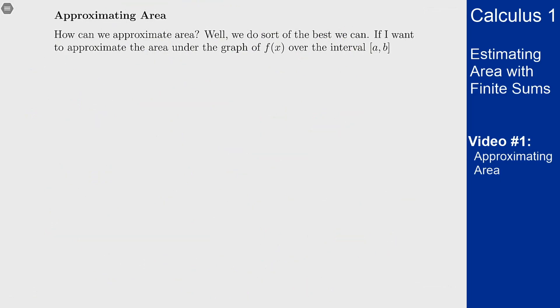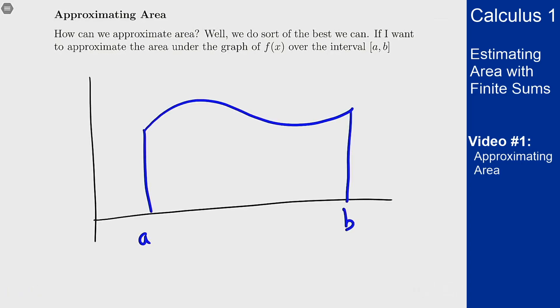How can we find these areas? We don't really have a way to find these areas yet but we can try to approximate them. In doing this we can just do the best we can. So if I have a graph of a function over some interval and I want to approximate the area, how can I do that?